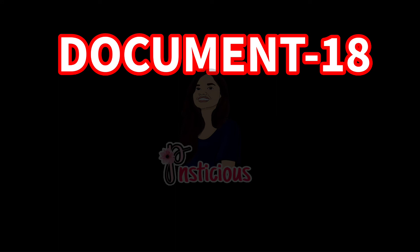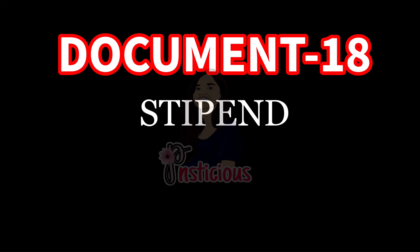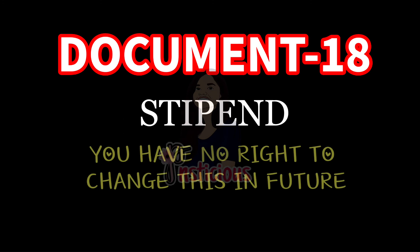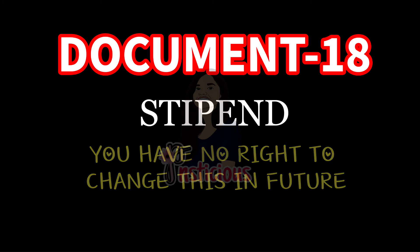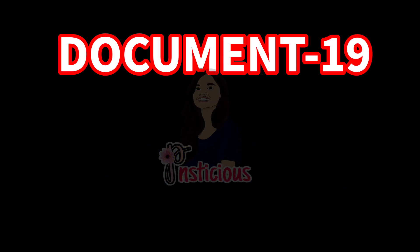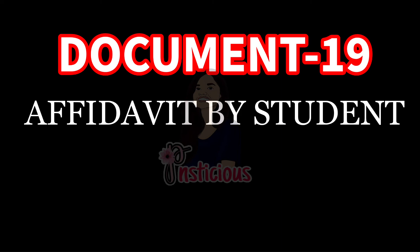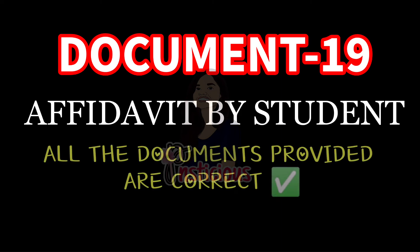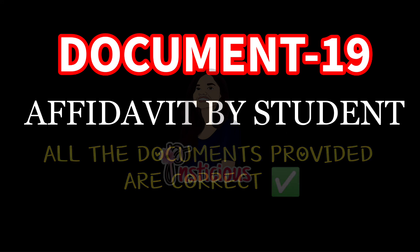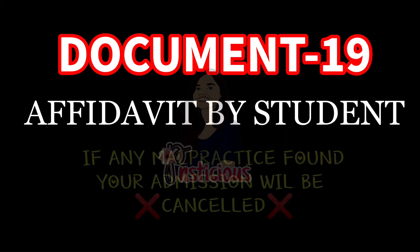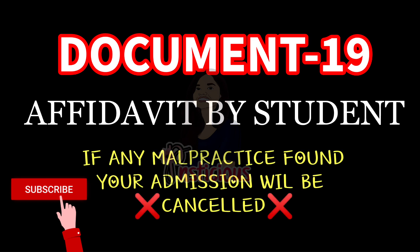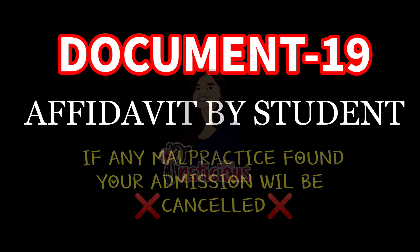The next affidavit is regarding your stipend money, in which you have to give a declaration that you will not seek permission to change this scheme in the future. The fourth affidavit is by the student, stating that all information and documents provided by you are original, and if any error is found in any document, you will be responsible and your admission will be cancelled.